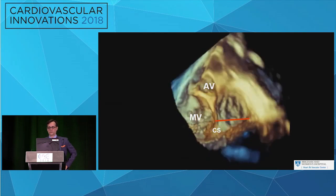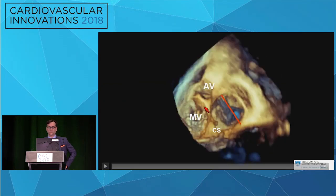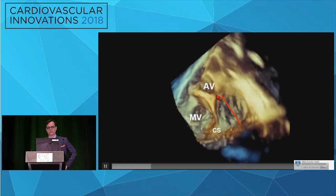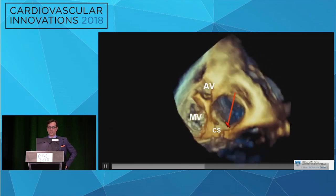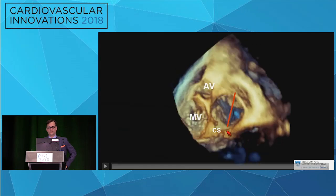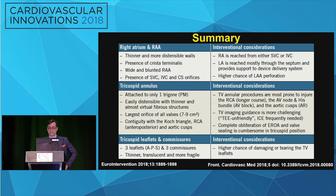Advancing the probe in the four-chamber view moves you toward the posterior leaflet — that advancing and withdrawing maneuver is very powerful. In the inflow-outflow view, whenever I see the aortic valve in the shot, I'm thinking about that commissure, and opposite that will be the posterior leaflet. In the modified bicaval view, you typically see the coronary sinus, so you know exactly where you are in your anatomy. Using anatomy as your primary driver will help guide your interventions.